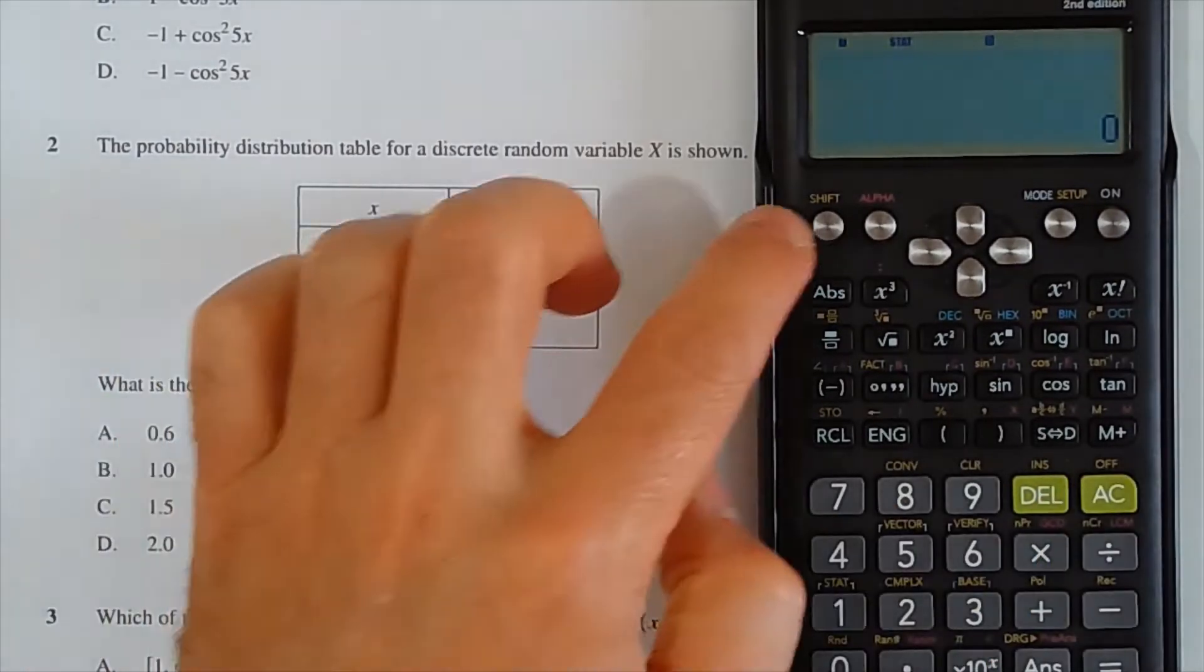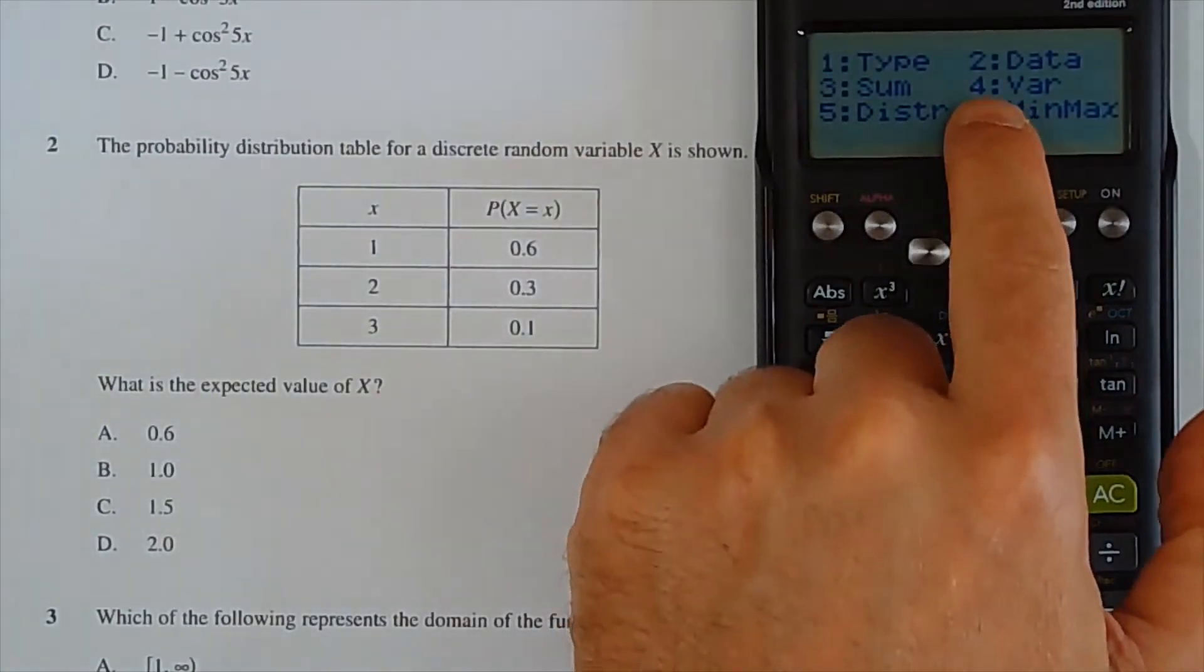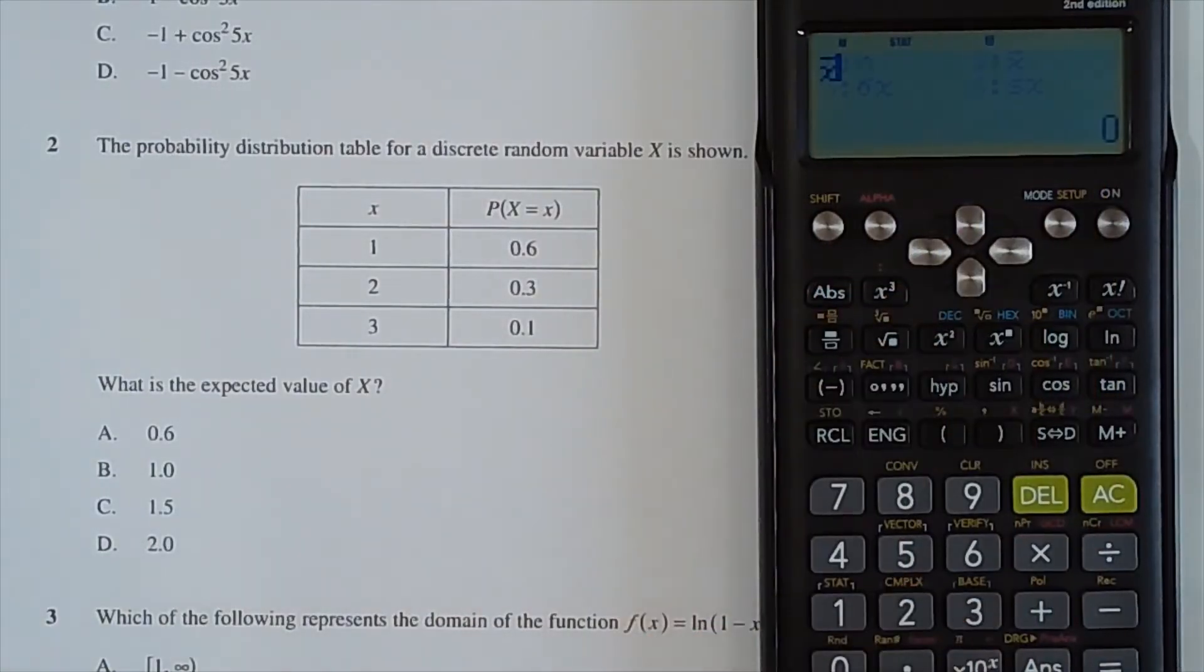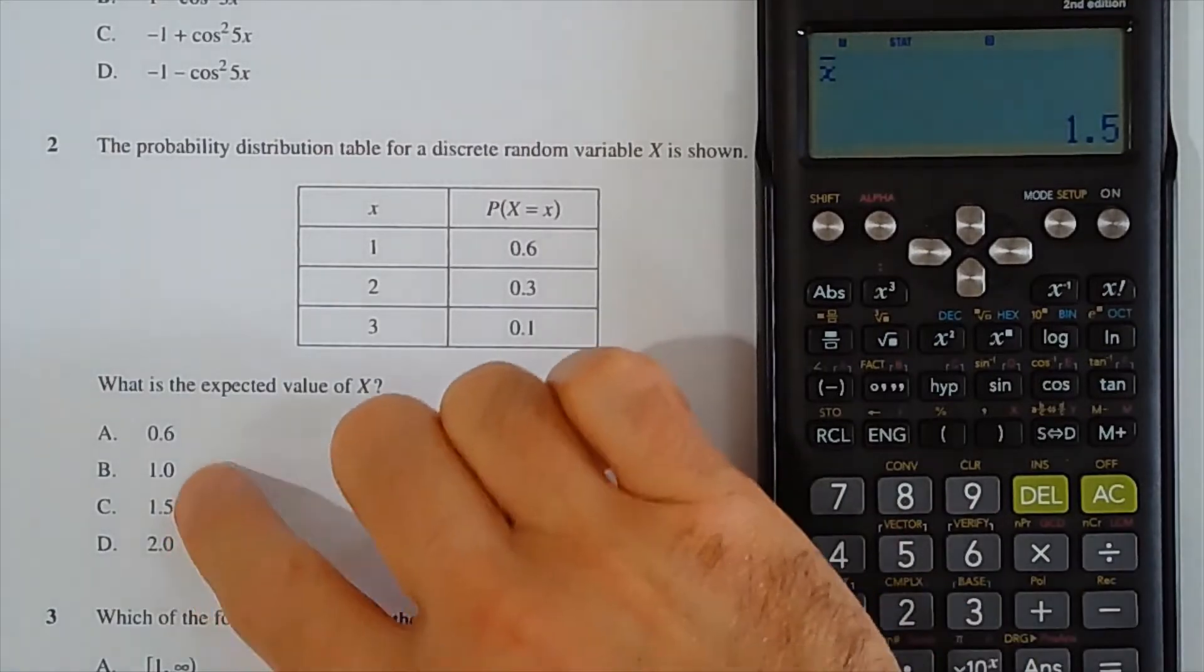Press AC, SHIFT 1, and then number 4, VAR, and then number 2, XBAR, to get the expected value, and the answer is 1.5. So option C.